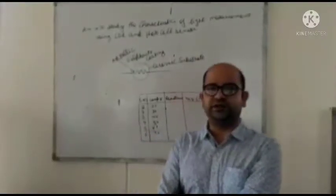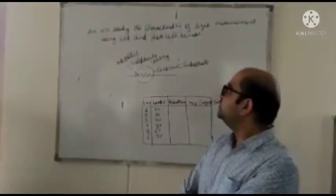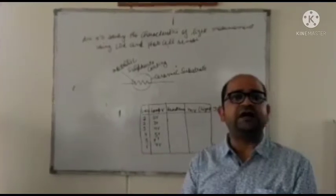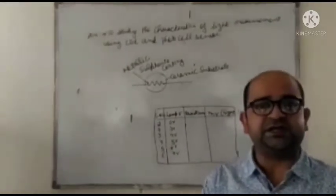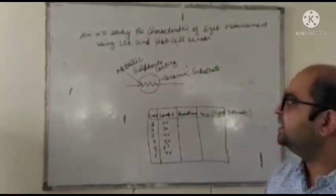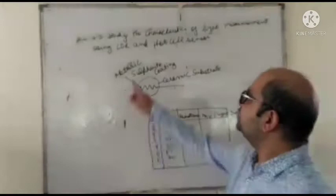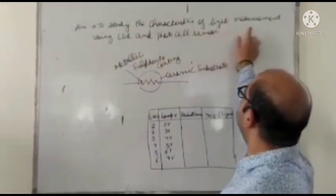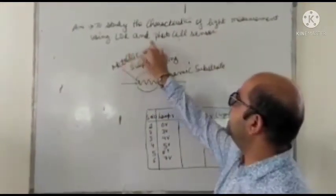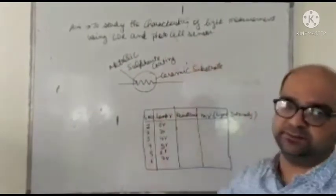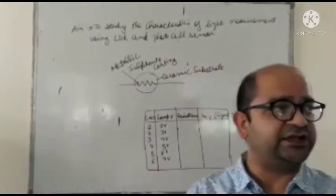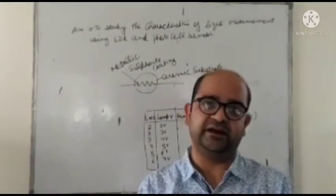Welcome to you various students. Today we are going to perform a complex experiment of electrical measurement and instrumentation lab. The experiment name is to study the characteristics of light measurement using LDR and solar cells. Now first of all I would like to know: what do you mean by LDR?